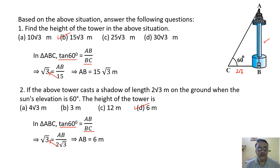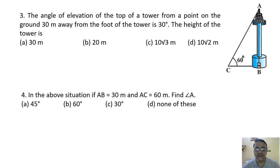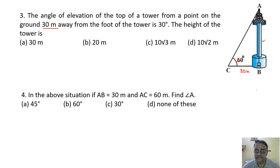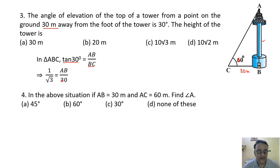Question 3: Angle of elevation from 30 meter away is 30 degrees. Using tan 30° = AB/BC: 1/√3 = AB/30, so AB = 30/√3 = 10√3. The correct option is option C.